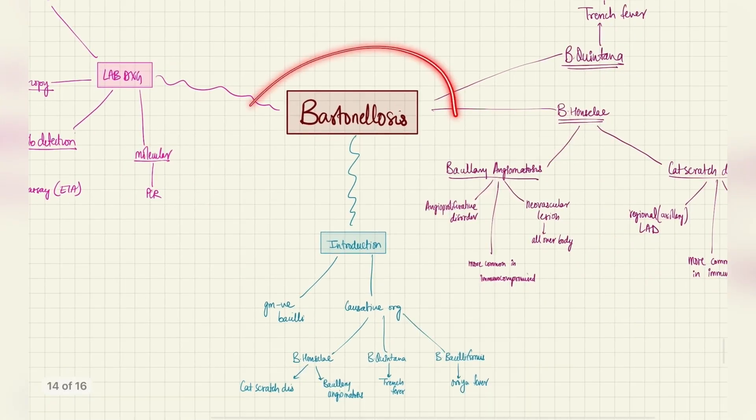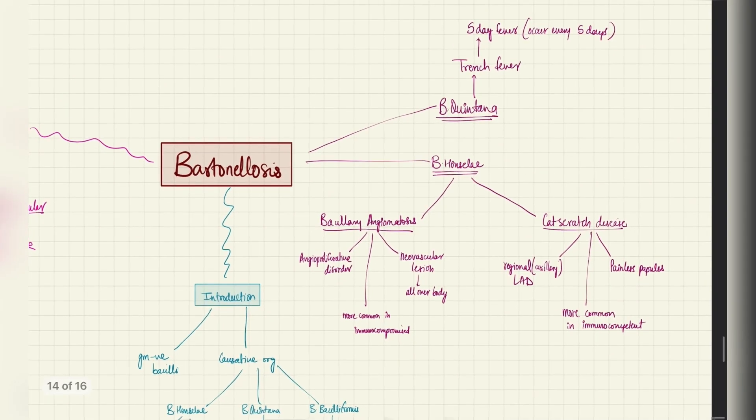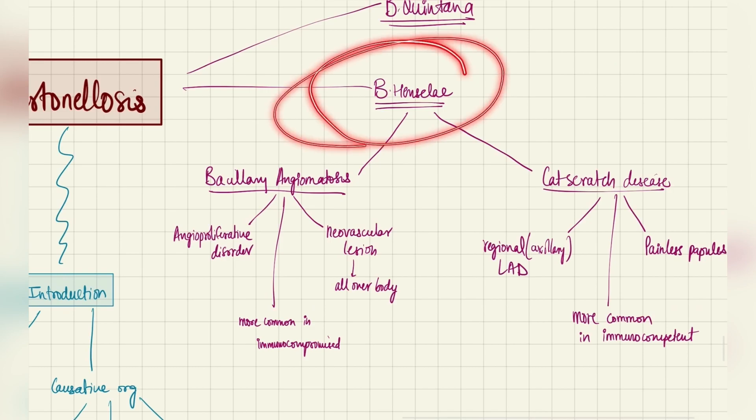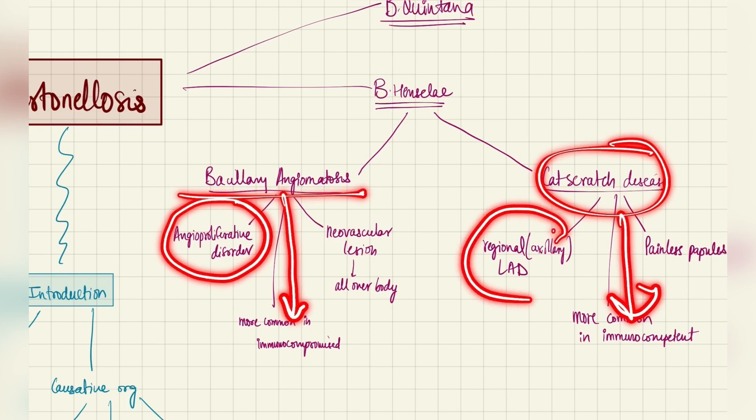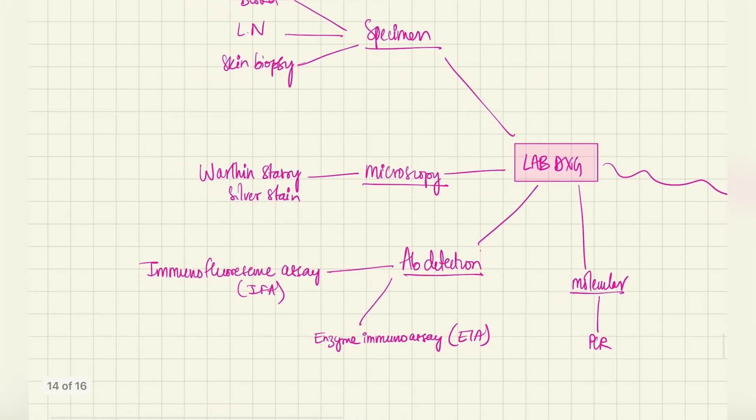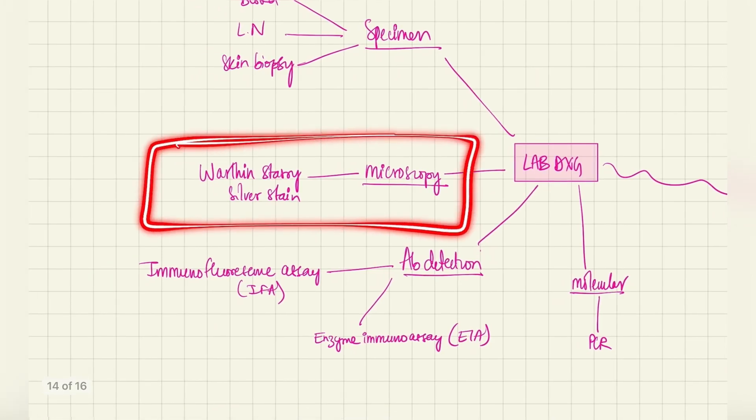It's a very small topic. Nothing important except a few important points, a few pointers. Bartonella henselae, causing bacillary angiomatosis in immunocompromised, and cat scratch disease in immunocompetent. Here, it is an angioproliferative disorder. Here, you get regional lymphadenopathy. Apart from this, lab diagnosis, microscopy by Warthin-Starry silver stain.